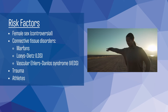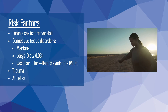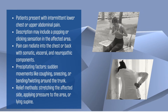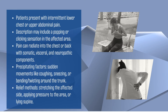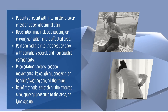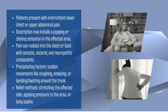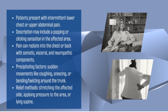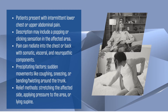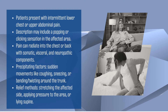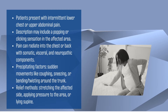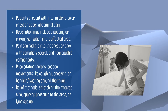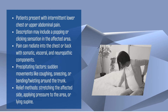There are several risk factors for Slipping Rib Syndrome. Patients commonly report intermittent lower chest or upper abdominal pain. They often describe a popping or clicking sensation in the affected area. This discomfort may extend into the chest or back, with patients often describing a combination of somatic, visceral, and neuropathic elements to the pain.